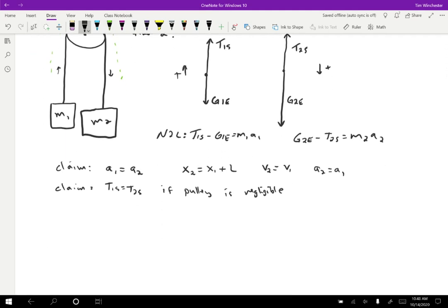What I'm going to do is take my two equations and rewrite them using the same variables since the tensions and accelerations are equal. I'm just going to use T for the tension. So T minus G1E equals M1A, and for the other one, G2E minus T equals M2A.